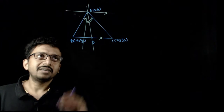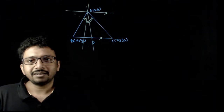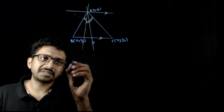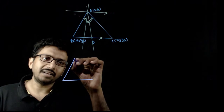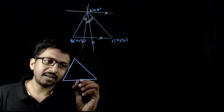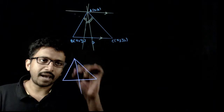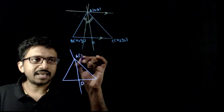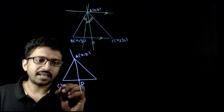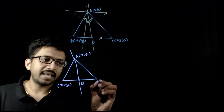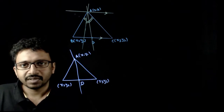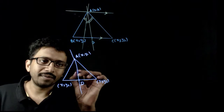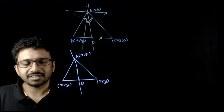First, if you want to find the equation of the median AD, you have a triangle where D is the midpoint and you have the median AD. The vertices are (x1, y1), (x2, y2), and (x3, y3). Now, what is the condition which each and every point on this median satisfies?